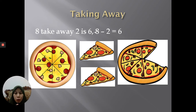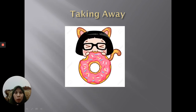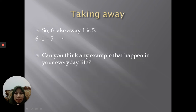So this is the next example. There are 6 fluffy sweet pink donuts. What happens is, someone might eat one of them. So it's left with 1, 2, 3, 4, 5 — 5 donuts. So 6 take away 1 is 5. 6 minus 1 is 5.